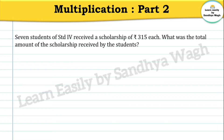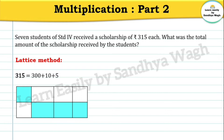Let us solve this problem using the lattice method, and then we will solve the same problem using the vertical method of multiplication. In the lattice method, 315 is written in expanded form: 300 plus 10 plus 5. Now we will draw the boxes and put the multiplication sign. We write each number in a box — 300 in one box, 10 in the next, and 5 in the third — and multiply each by 7.